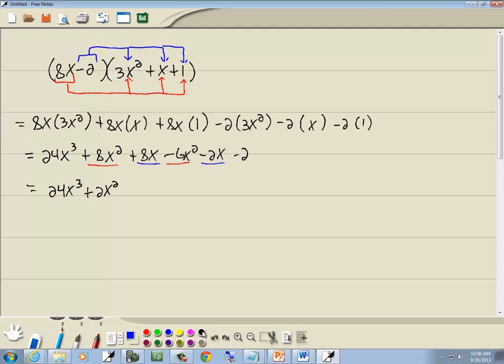Here's an x, here's an x. And again, we'll add or subtract the numbers out in front. 8 minus 2 gives us 6x. And then we'll bring it down to minus 2. And that's our answer.